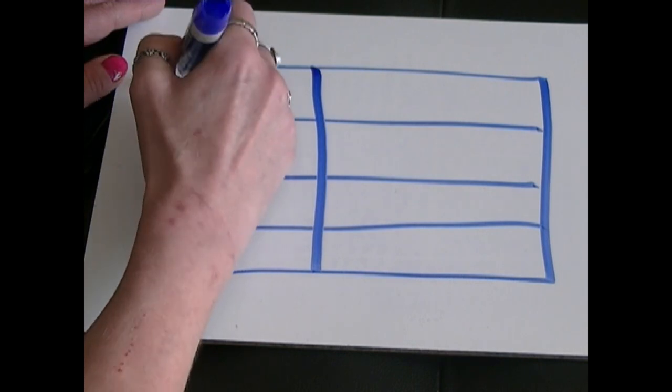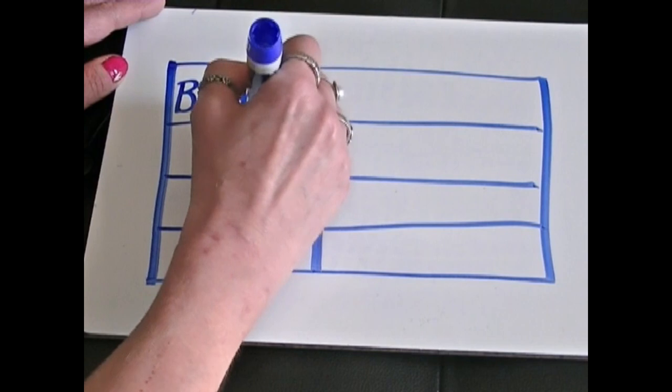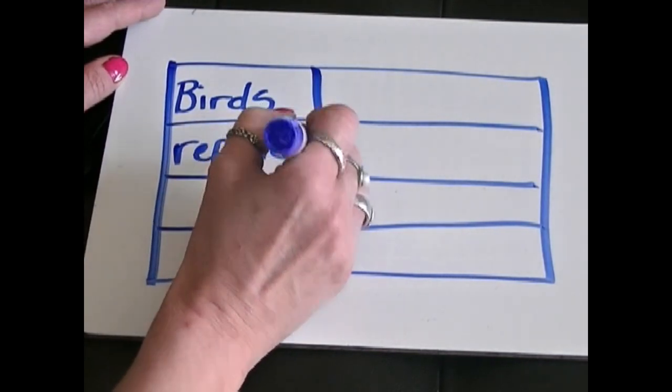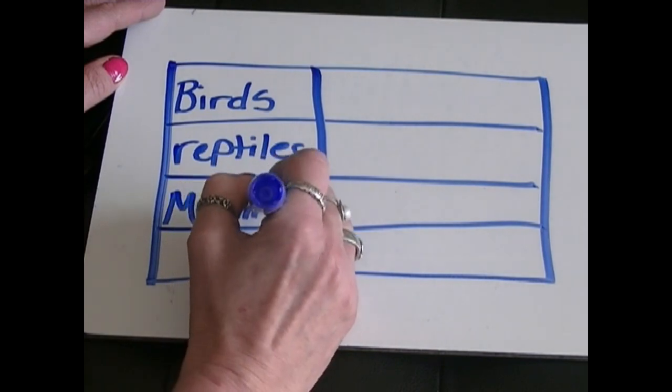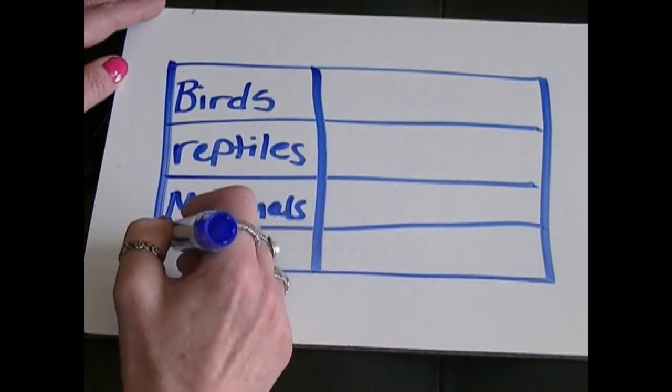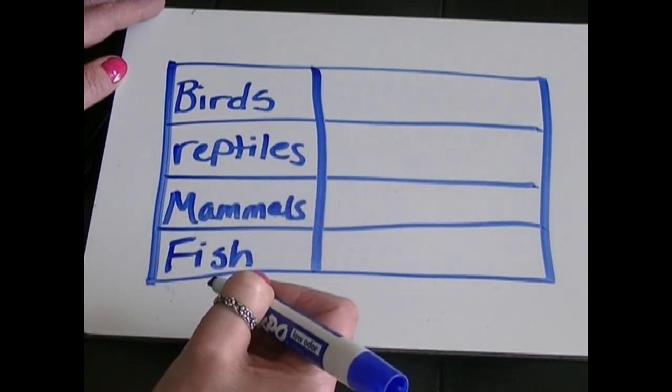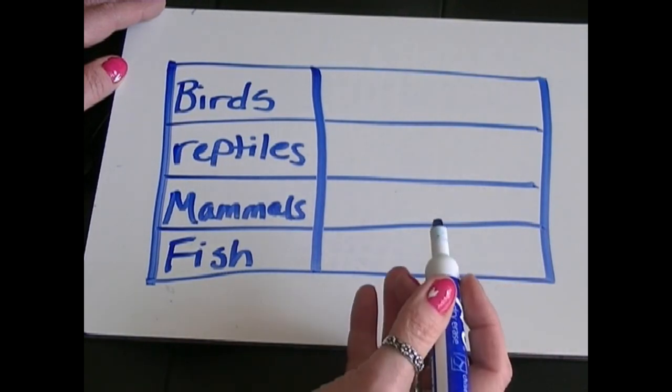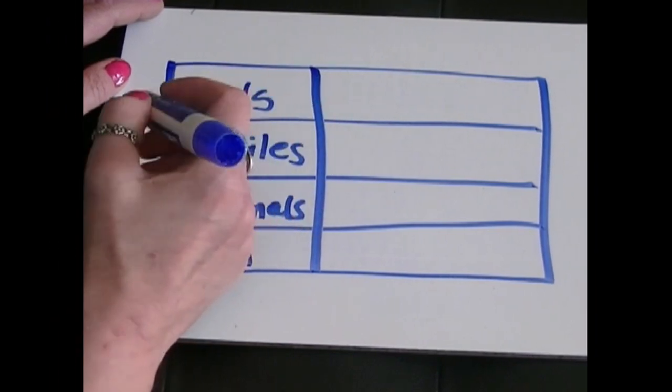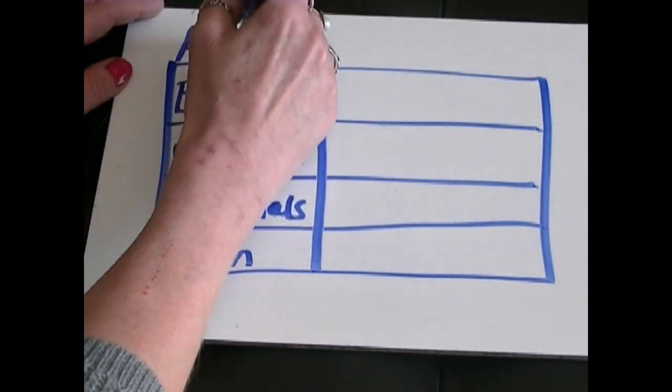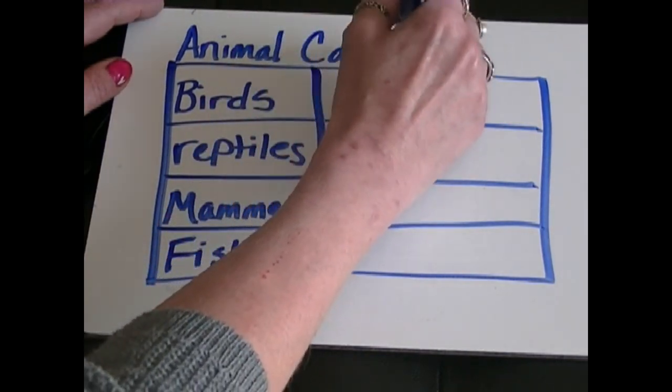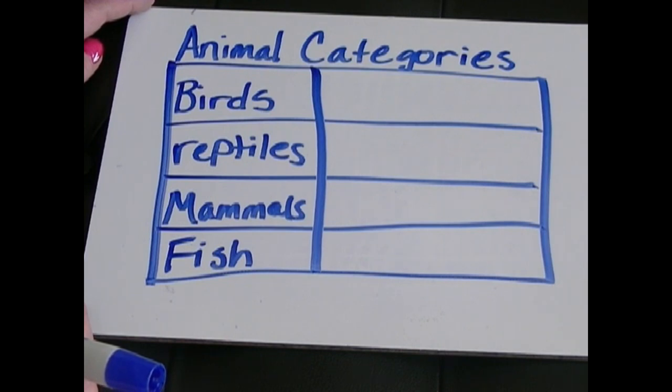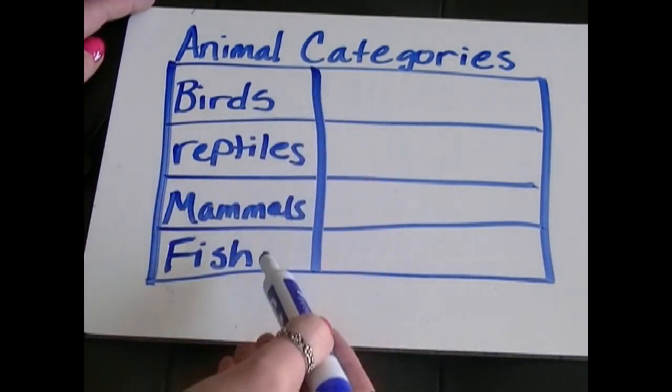So we are going to have birds. We talked about reptiles. Mammals. And we also talked about fish. Okay. Now, before we start, let's finish this up by adding a title to it. Whenever you're making a table and you're going to display data, you're going to need to have a title. So let's just name this animal categories. Okay. Go ahead and get your table all filled out like mine. And then we'll start tracking our animals and seeing how many we have in each one of these different categories.